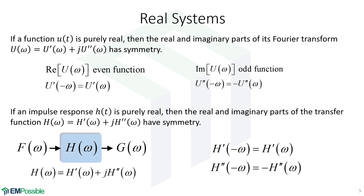If this function is an impulse response, that implies that our transfer function has the same symmetry properties — the real part will have even symmetry, and the imaginary part will have odd symmetry. I'm summarizing those symmetry conditions here, and we will use those later when we derive the Kramers-Kronig relations.